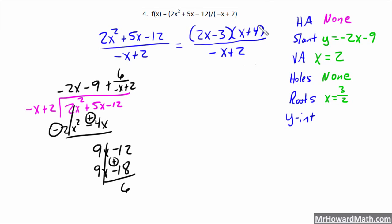x plus 4, set that equal to 0. You get x equals negative 4. So, that's another root at negative 4.